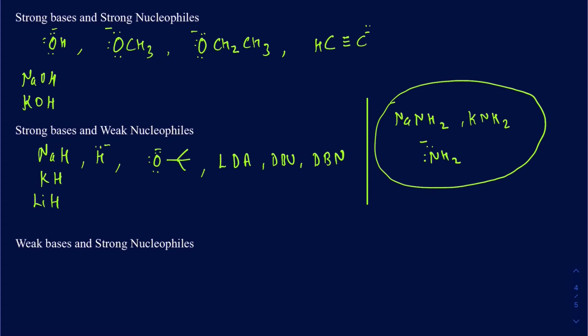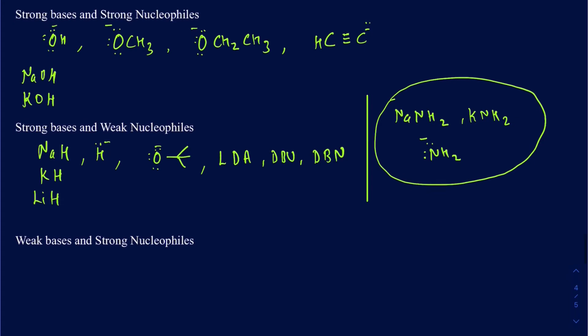NH₂⁻ likes to act as a base rather than a nucleophile. If you want to use something similar as a nucleophile to install an amine group, why not use ammonia? Ammonia is a weak base but a relatively strong nucleophile, so it will do the job for nucleophilic substitution reactions. If you use NaNH₂, you always have the risk that it's going to run an elimination reaction over the substitution reaction.